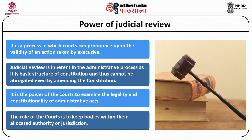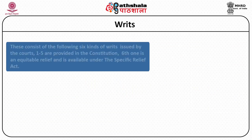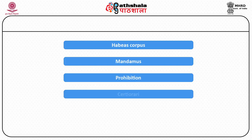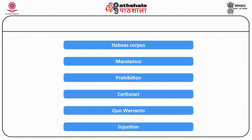Another way the judiciary exercises control is through the issuance of writs, an extraordinary remedy available only from the higher judiciary — the High Courts and Supreme Court — under Articles 226 and 32. There are six kinds of writs: habeas corpus, mandamus, prohibition, certiorari, quo warranto, and injunction. The first five are provided in the Constitution. The sixth, injunction, is provided under the Specific Relief Act and is a form of equitable relief.